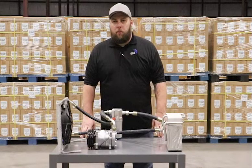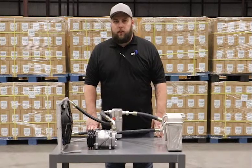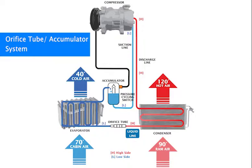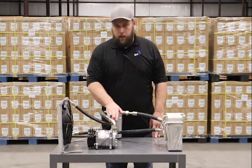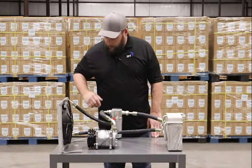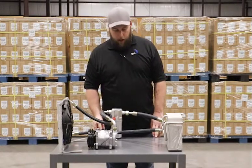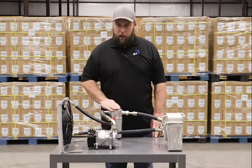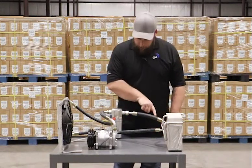I'm Josh with Global Parts. I'll take a few minutes to go over a basic AC system — how it functions, how it operates. This is an orifice tube accumulator setup. This is your compressor, this is your discharge line going into the condenser with the fan assembly, this is your liquid line, and this is where the orifice tube is located, because this is an orifice tube accumulator system. This is your evaporator.